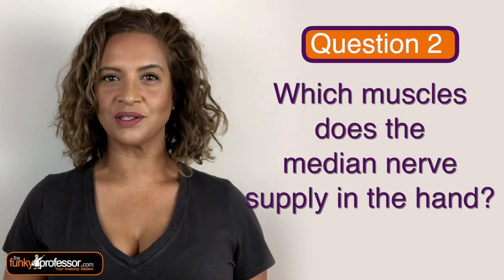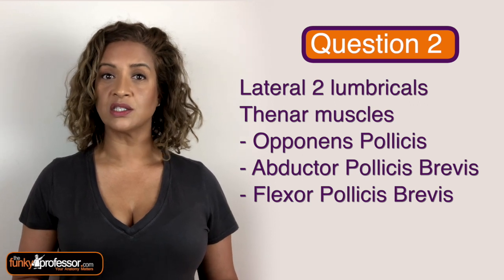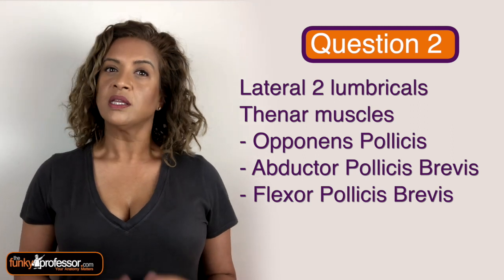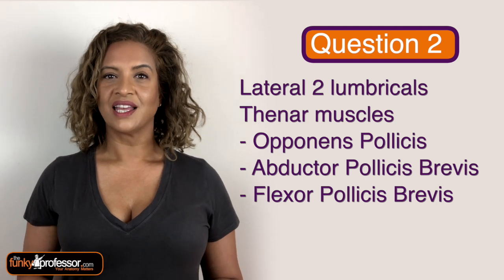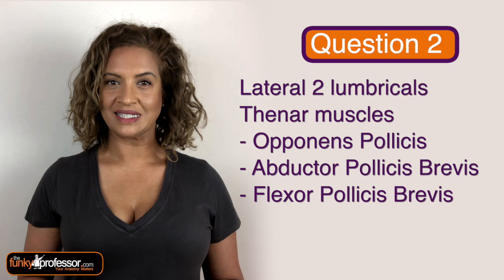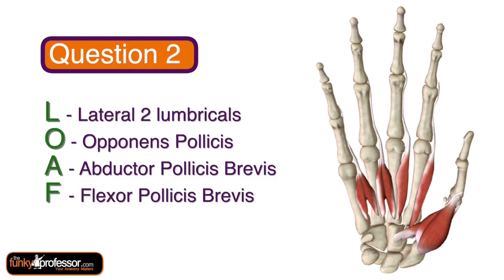Number 2 was: which muscles does the median nerve supply in the hand? The answer is the lateral two lumbricals, which come off the tendons of flexor digitorum profundus and supply the index and middle fingers. The median nerve also supplies the thenar muscles: opponens pollicis, abductor pollicis brevis, and flexor pollicis brevis. The mnemonic I use is LOAF — Lateral two lumbricals, Opponens pollicis, Abductor pollicis brevis, and Flexor pollicis brevis.